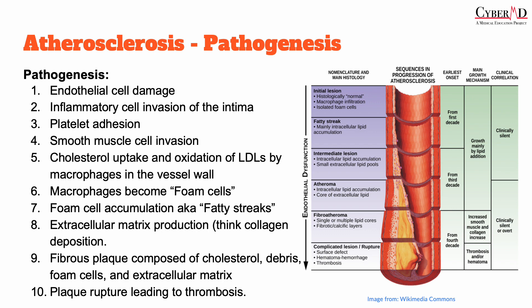Afterwards, there is production of an extracellular matrix — think collagen deposition. After all of this, a plaque exists that is composed of debris, cholesterol, foam cells, and the extracellular matrix. That plaque can then rupture and cause a thrombosis, which may subsequently lead to ischemia and/or an infarction.